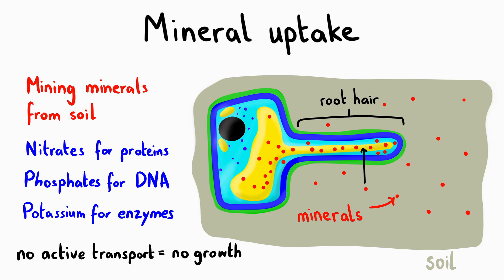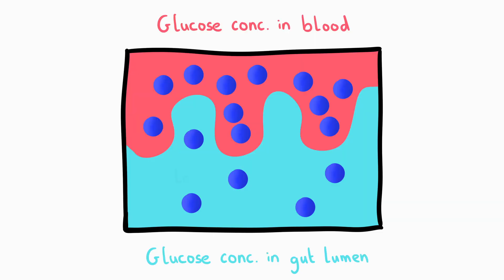In the human digestive system, glucose is absorbed through the small intestine into the bloodstream by active transport. After a meal, glucose concentration in the gut lumen can be lower than in the blood. Against this concentration gradient, energy is used to move glucose into the bloodstream.